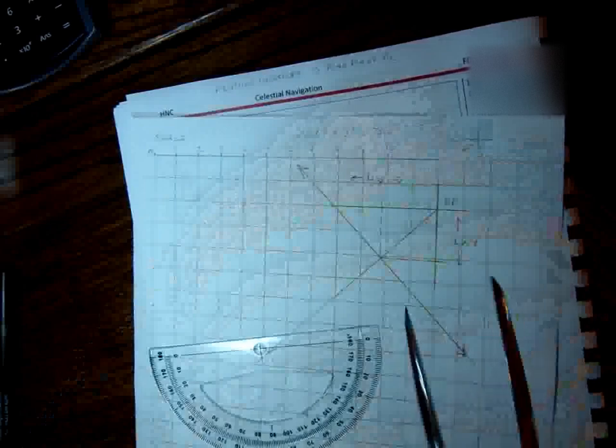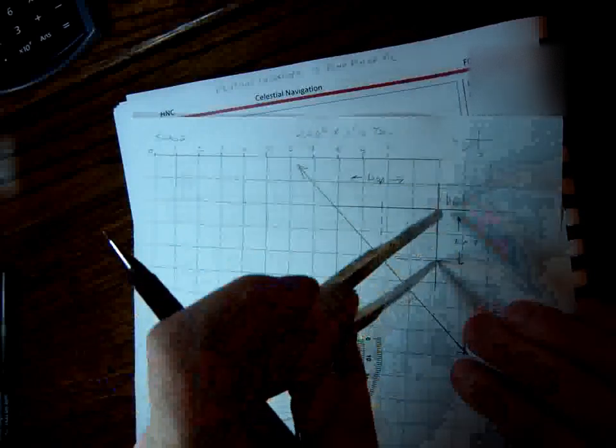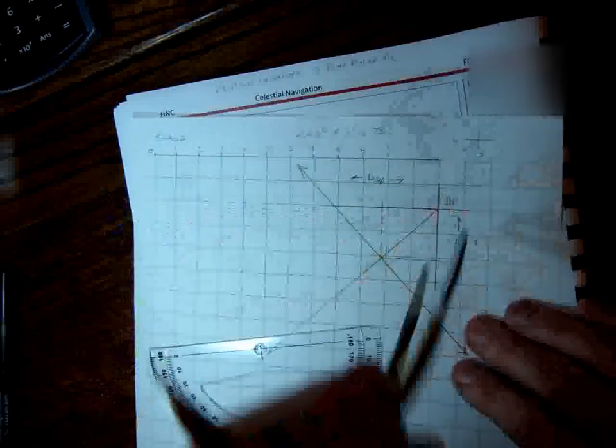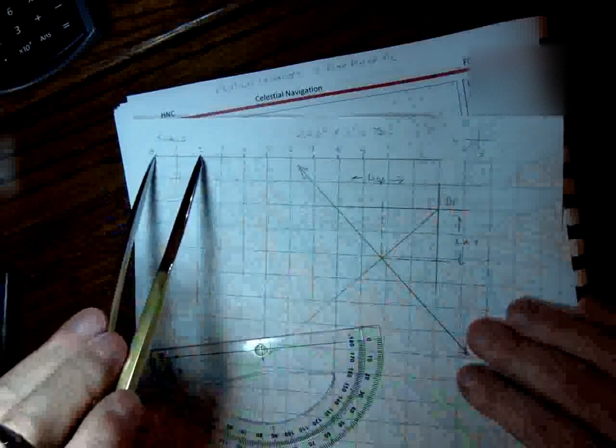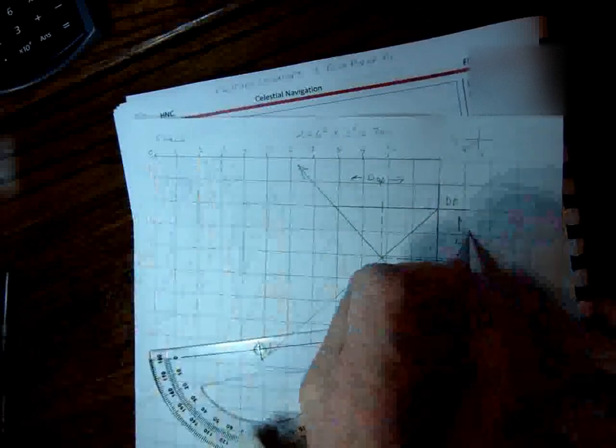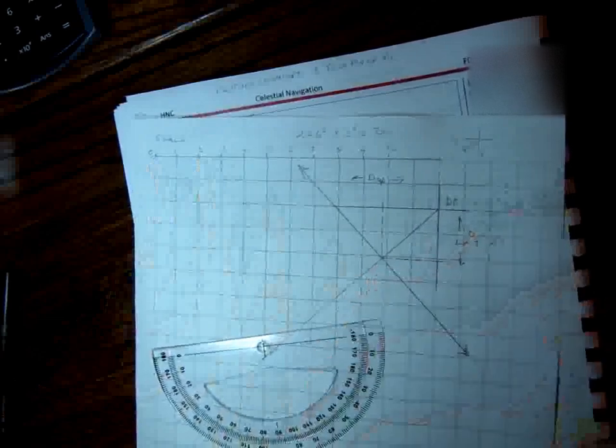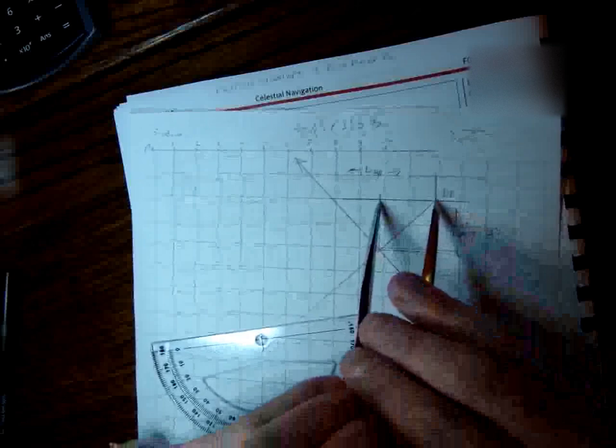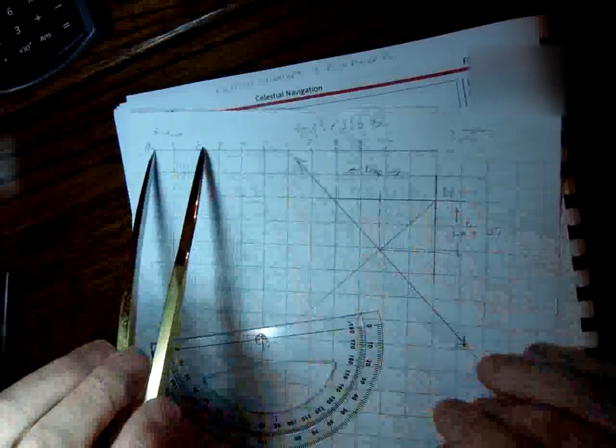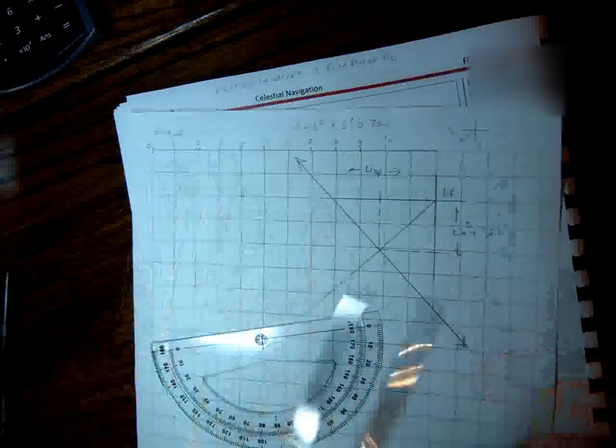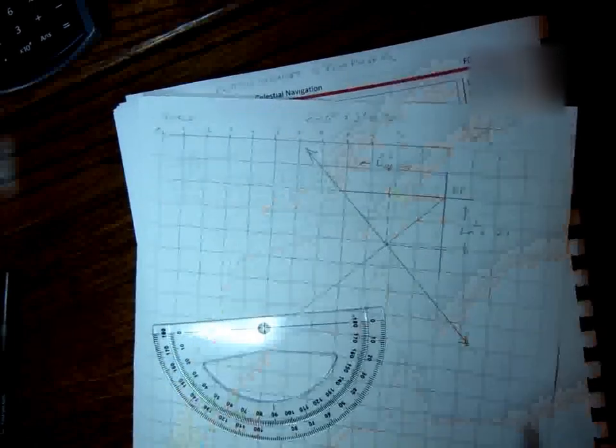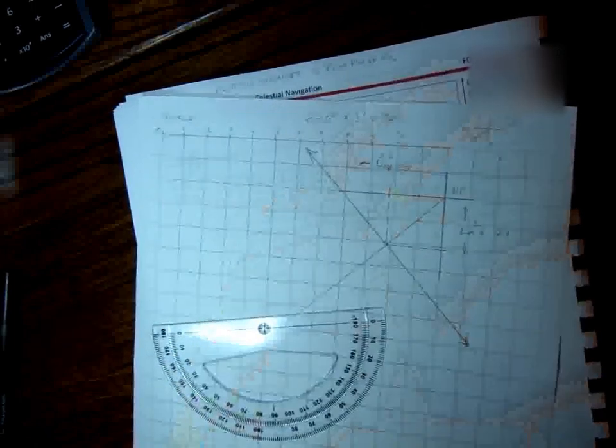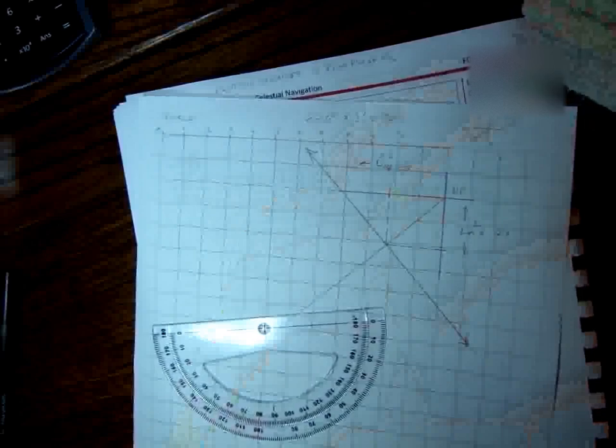Then we get our dividers again, and we would measure the amount of d latitude. And we go to our scale, and we find that it's 2.1. So the d lat is 2.1 miles. We do the same for our departure. Just measure that there, and we'd find that our departure is 2.2. So we've got departure of 2.2, d lat of 2.1.